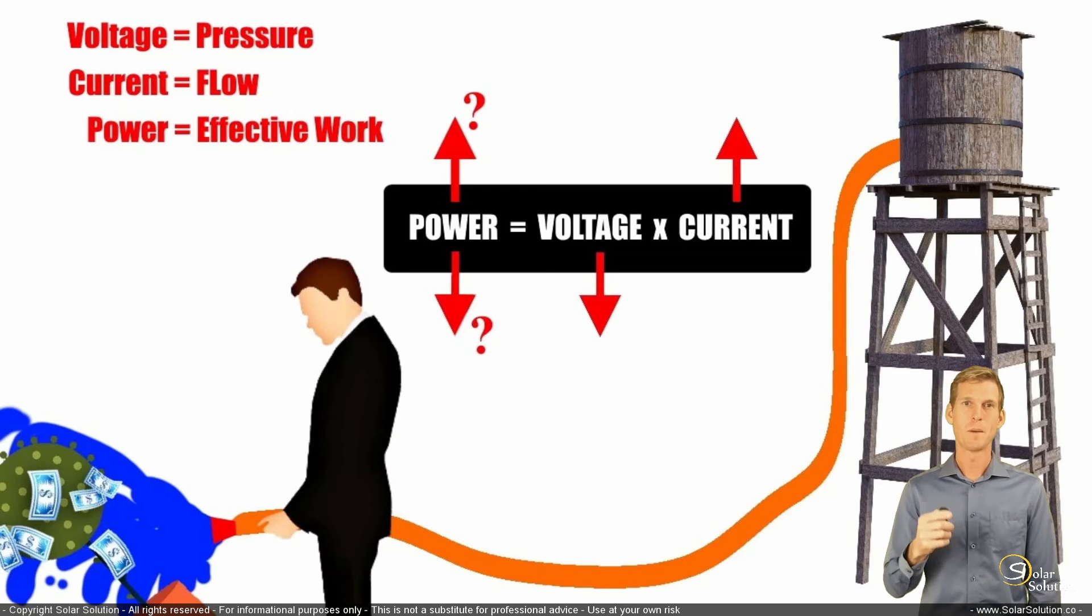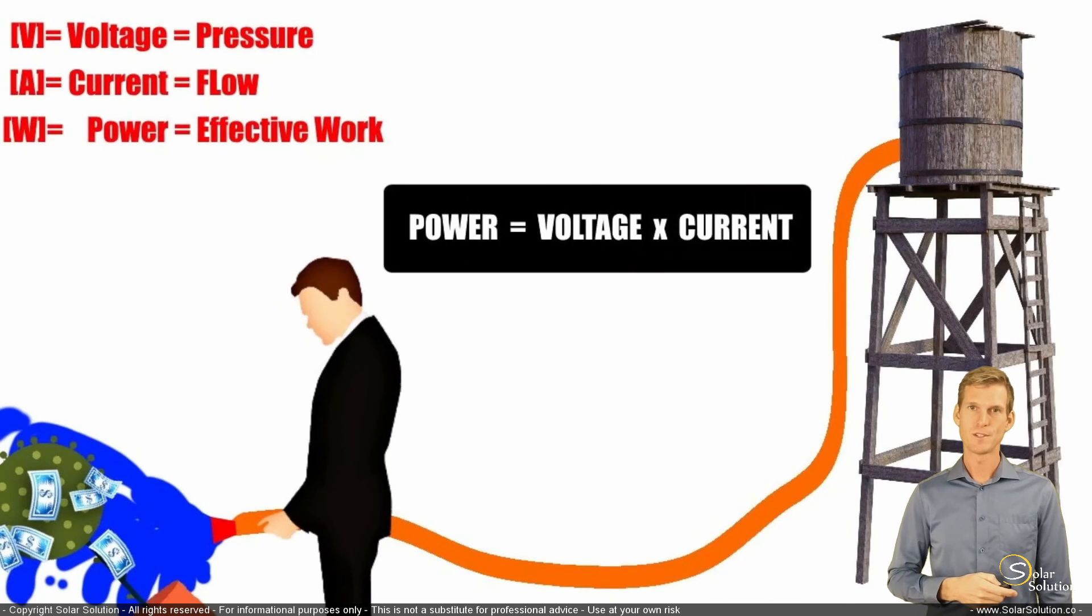That makes sense. So just remember power equals voltage times current. And the units that we normally use to express voltage, current, and power: for voltage, we use the V from volts. For current, we use the A from amperage. And for power, we use the W from watts. So remember power equals voltage times current.